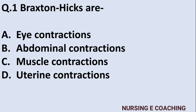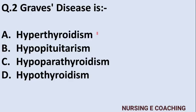Question 1: Braxton Hicks are — what is the answer? Option A: eye contractions, Option B: abdominal contractions, Option C: muscle contractions, Option D: uterine contractions. Answer is D — uterine contractions.